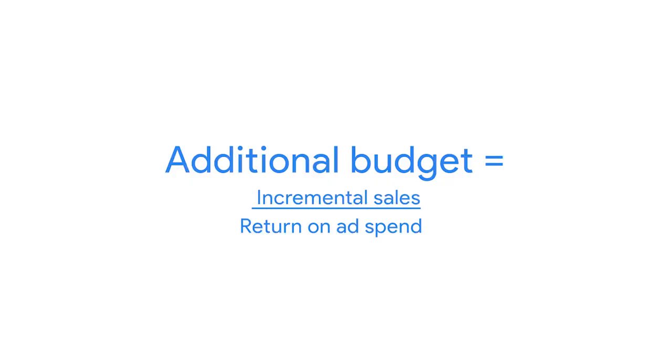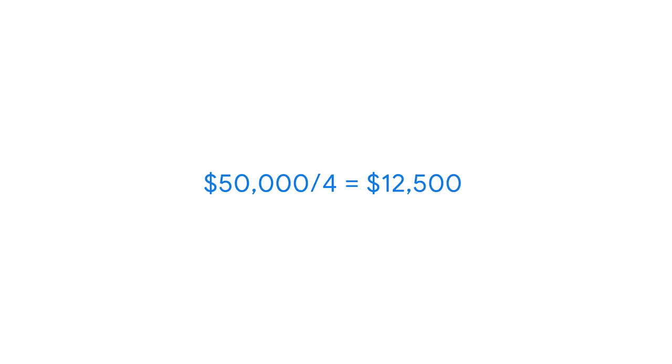Next, if the current marketing ROI is two and the marketing goal is to double it, you can assume a four-to-one ROAS to be aligned. You can then calculate the incremental budget you need by dividing the incremental sales amount by the return on ad spend. Divide the incremental sales amount, $50,000, by the target ROAS of 4. You will need to request $12,500 of additional campaign budget to drive additional sales.